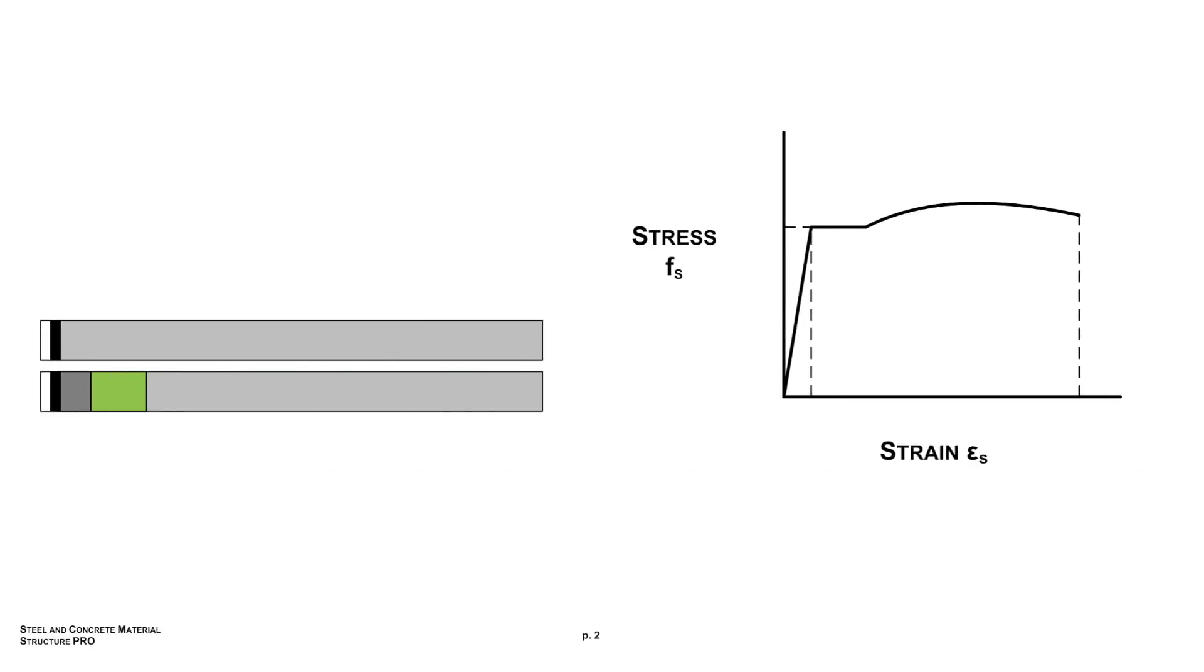So moving along to the steel material. Steel, probably the second most common construction material. And really, it's like an engineer's dream. Steel, it's so well-behaved. So let's talk about a little bit of what makes up steel, and again, its stress-strain curve. So just an overview.